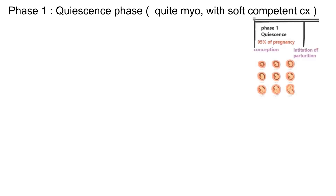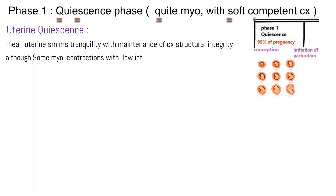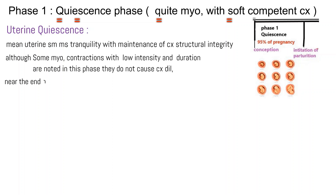Phase one: quiescence phase — quiet myometrium with soft, competent cervix from conception till the last weeks of pregnancy. This phase normally comprises 95% of pregnancy. Uterine quiescence means uterine smooth muscle tranquility with maintenance of cervical structural integrity, although some myometrial contractions of low intensity and brief duration are noted. Near the end of pregnancy, especially in multiparous women, these become Braxton Hicks contractions or false labor.